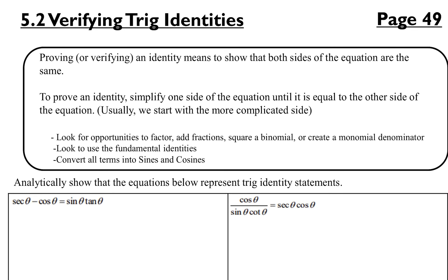Hey, y'all. We are on page 49 today. We're going to look at verifying trigonometric identities. Pretty much what we're trying to do is show that the identities are the exact same on both sides. It's kind of what we were doing before, except sometimes they're not going to simplify down to just one trig function — they might simplify to multiple things.